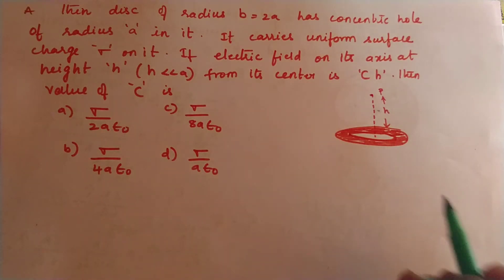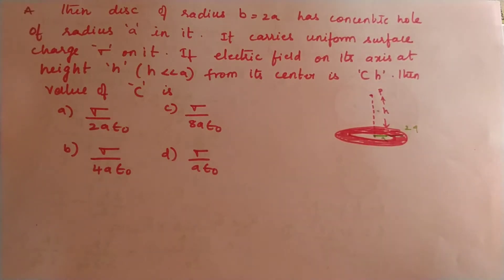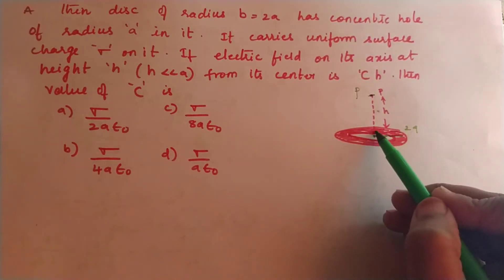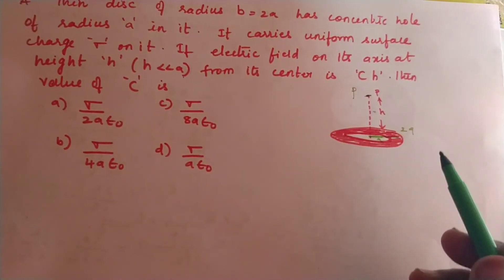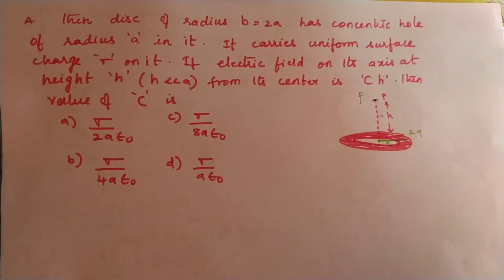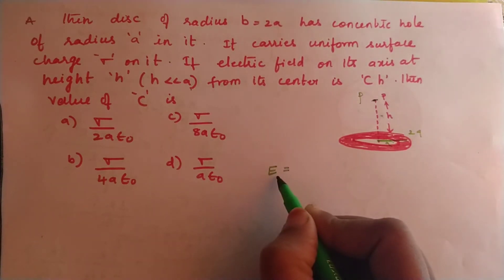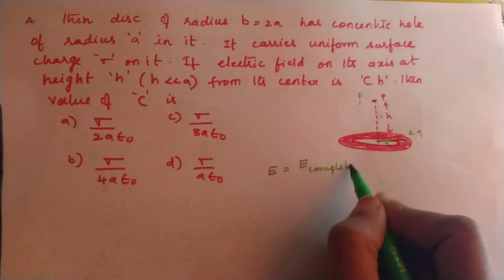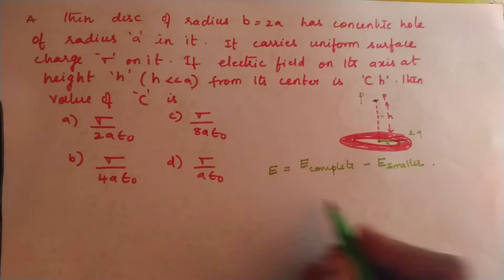In the next question, there is an annular disc with outer radius 2a and inner radius a (a hole at the center). We need to find the electric field at a height h above the center, given h << a. The field from the annular disc equals the field due to the complete disc (radius 2a) minus the field due to the smaller disc (radius a).